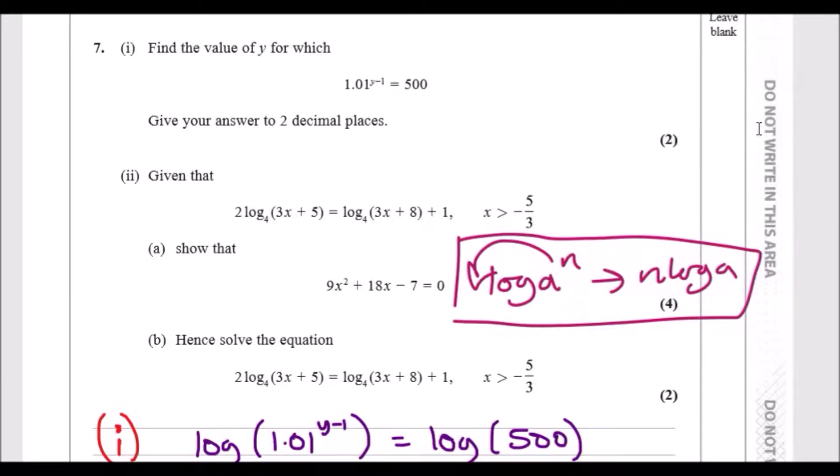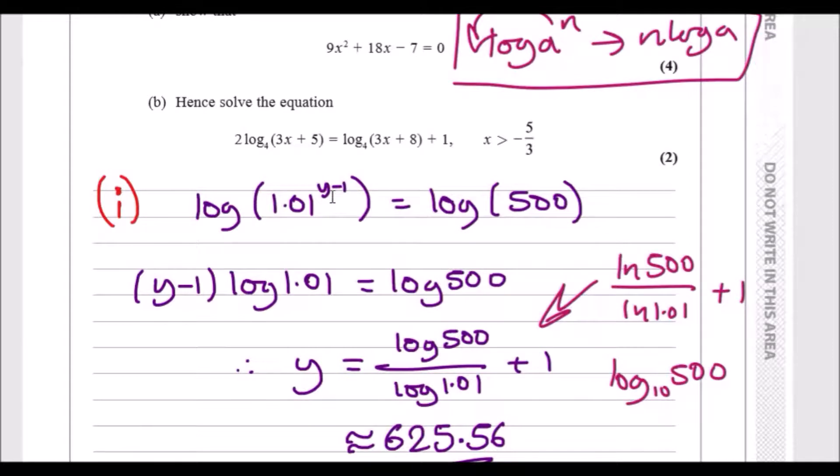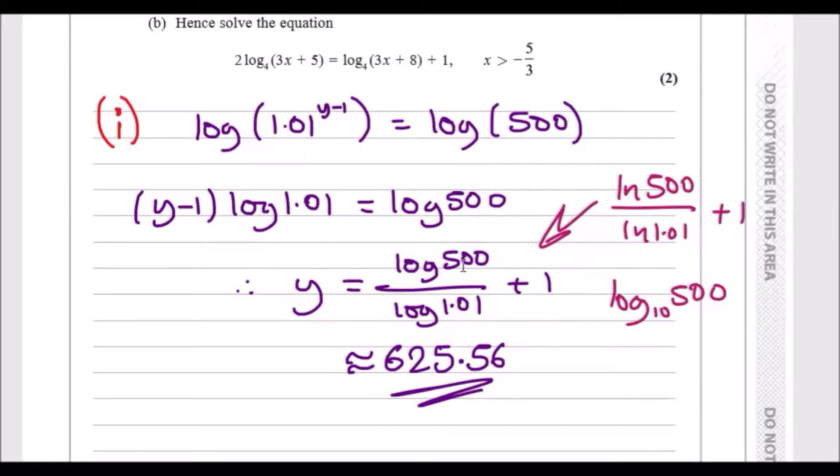Looking at the solution, with (y-1), you can drop it in front of the log, so it'll be (y-1) times log 1.01, and log 500 is the same. Then just rearrange to make y the subject. I divided log 1.01 across and added one, and you can smash this in the calculator to get the answer.